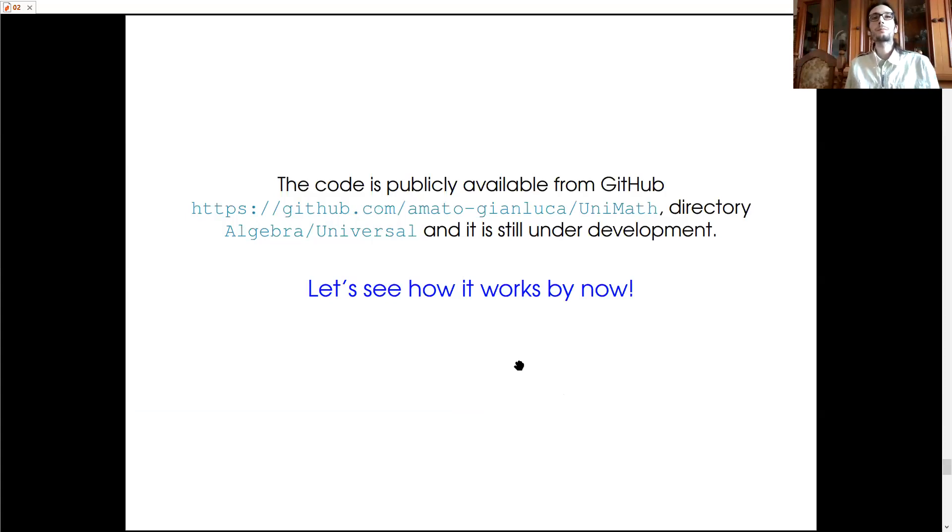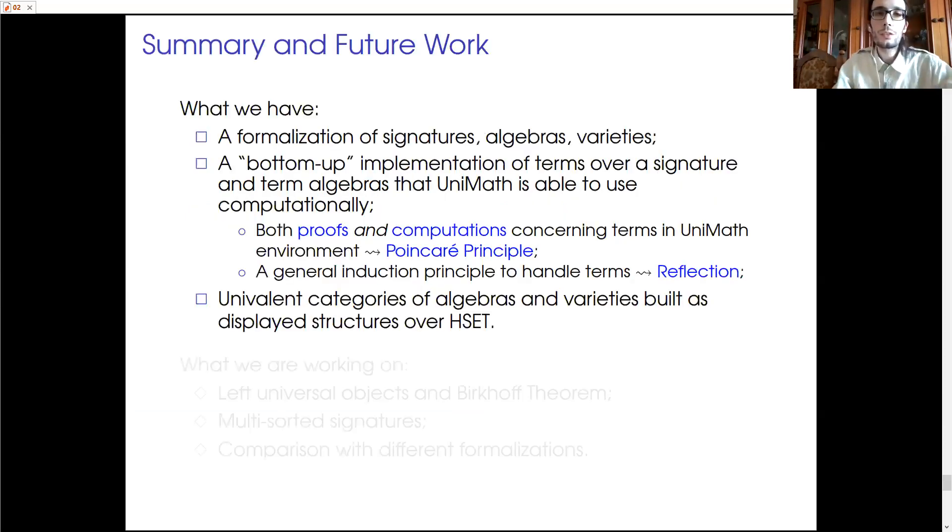Now, just to sum up, what have we done? We have introduced signatures, algebras, and varieties in UniMath. And we constructed the univalent categories of varieties and algebras as displayed structures over the univalent category of hSets. And we have been able to construct the initial object of the category of algebras. And we proved that it corresponds to the term algebra over the empty set. And more generally, we have been able to prove that the term algebra over a set V is the free algebra over V.